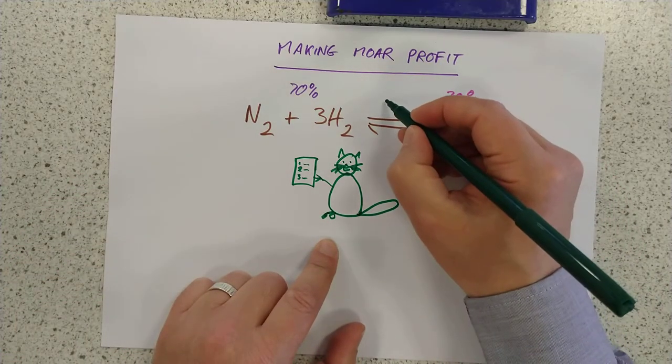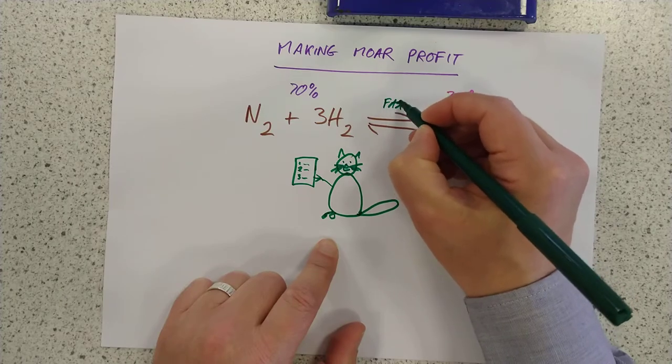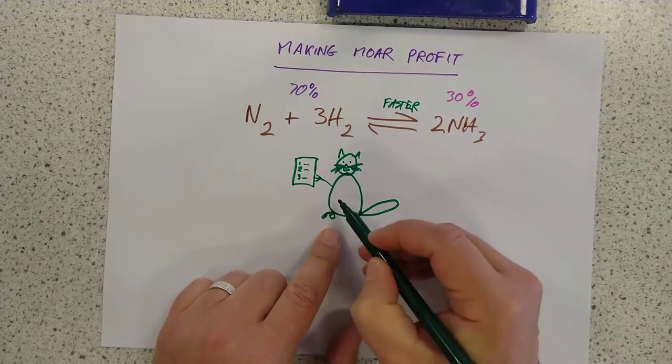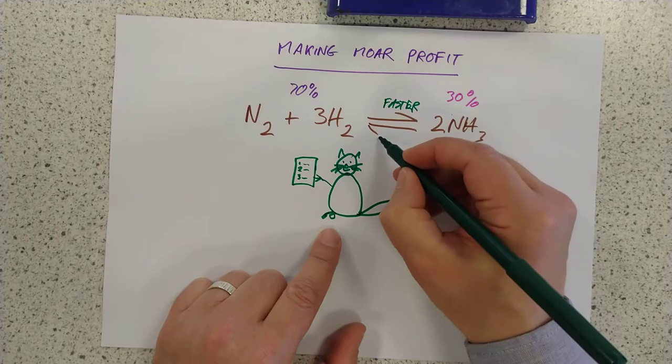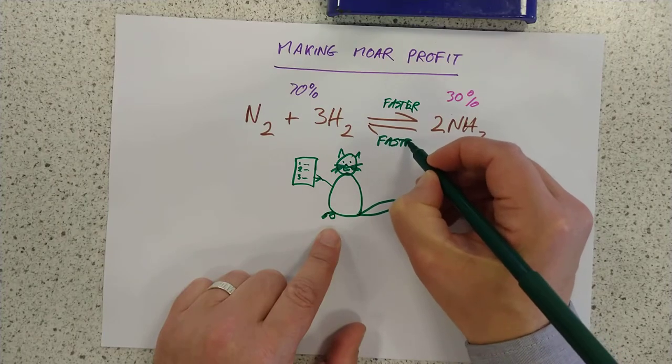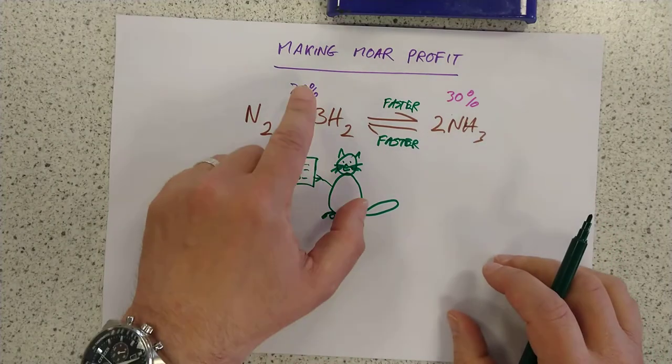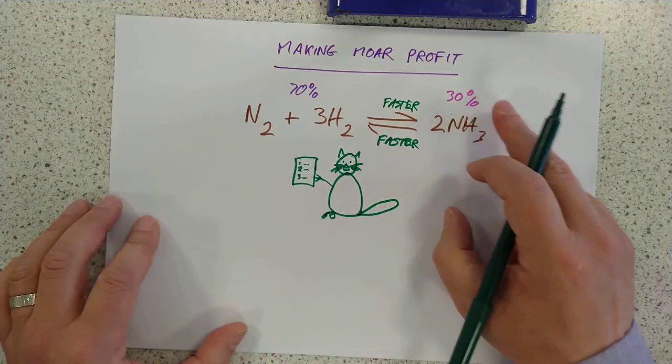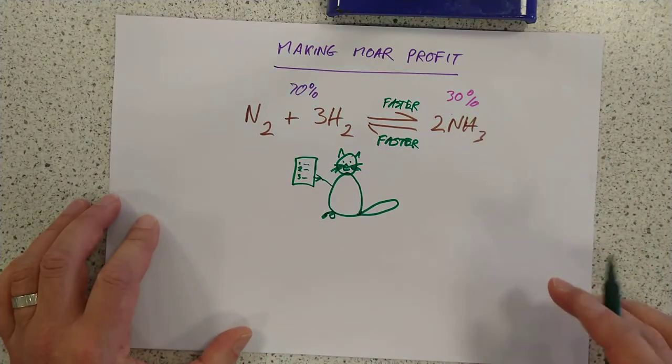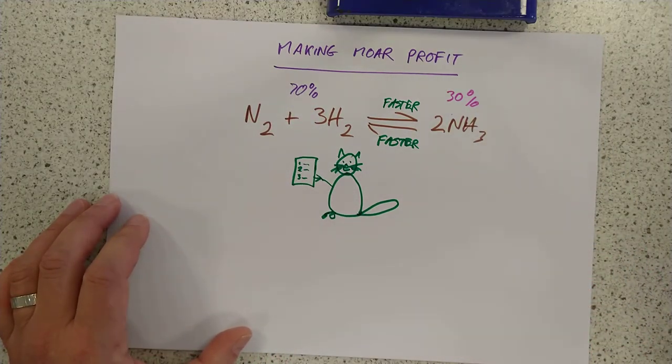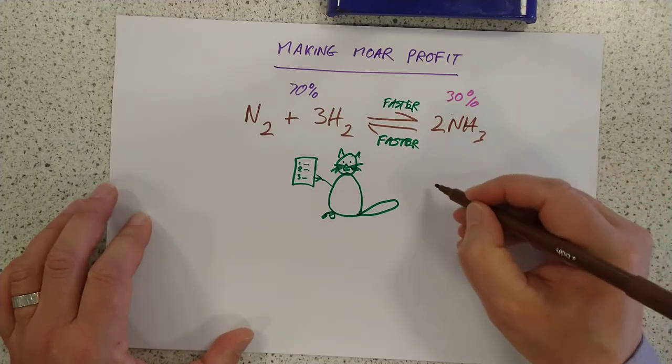Because if you speed up this reaction faster, the catalyst doesn't know that you're only supposed to speed up this one, and it speeds up this one too. Which means, you still have exactly the same balance. You haven't changed it one bit. What you do do, is you get there faster. And that's why they're used in industry.